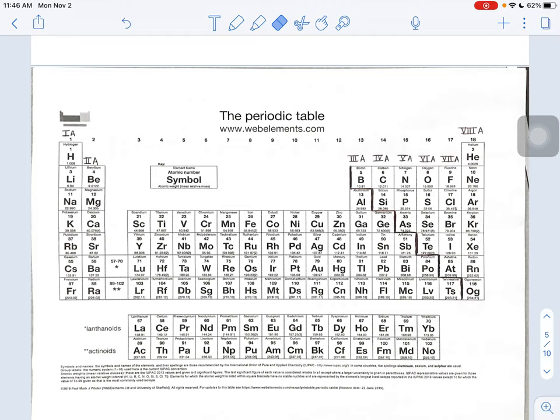We organize our periodic table in the way that we do because of the way that the electrons are arranged in the atom. Again, that's a really important idea, so I'm going to say it one more time. We organize the periodic table the way that we do because of the way the electrons are arranged in an atom.